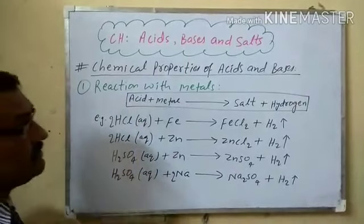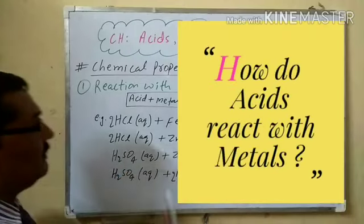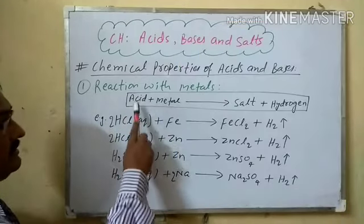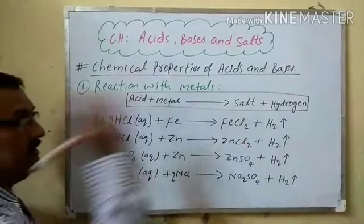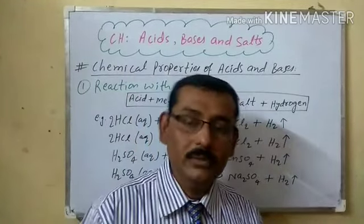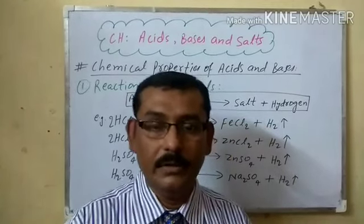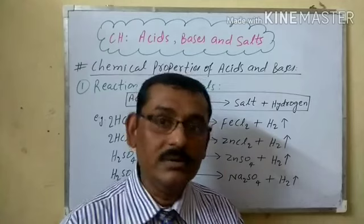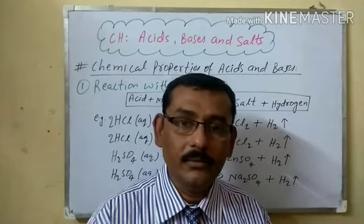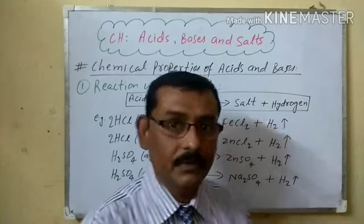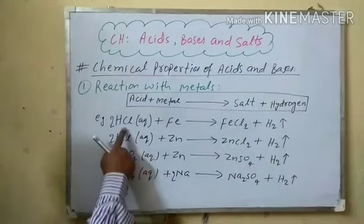The first reaction we will discuss is the reaction of acids with metals. The main format of the reaction is: acid plus metal gives salt and hydrogen. You have to remember this — whenever an acid reacts with a metal, it always forms salt and hydrogen gas. Which acid and which metal will tell you which salt is formed.